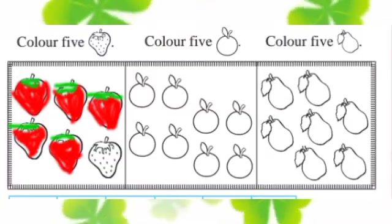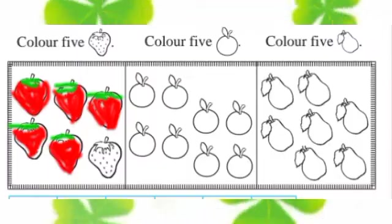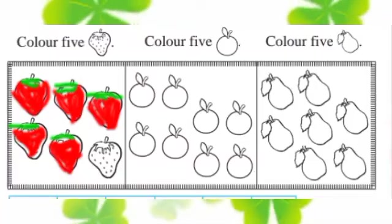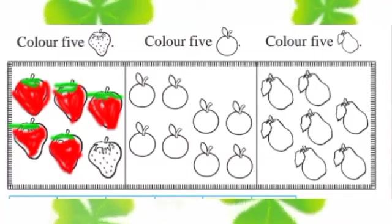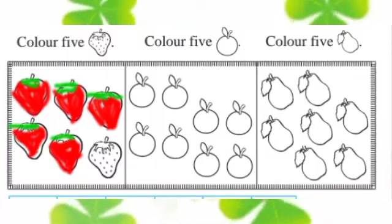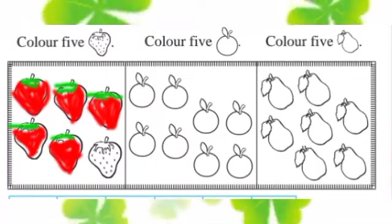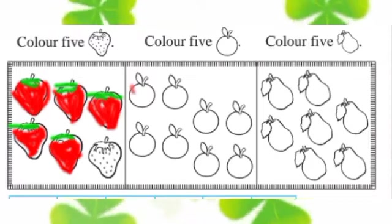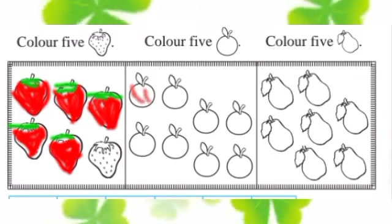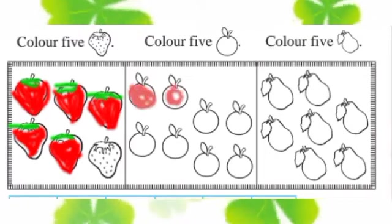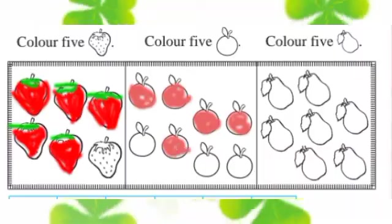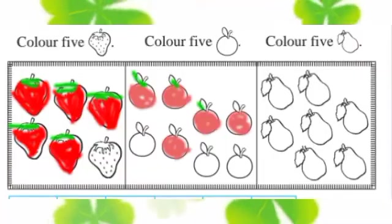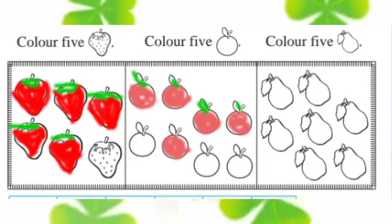Now color 5 oranges. आता 5 संत्र्यांना रंग द्यायचा आहे. या पद्धतिने count करायचा आहे आणि 5 संत्र्यांना रंग द्या. 1, 2, 3, 4 and 1 make 5. चला तर 5 संत्र्यांना रंग द्या.